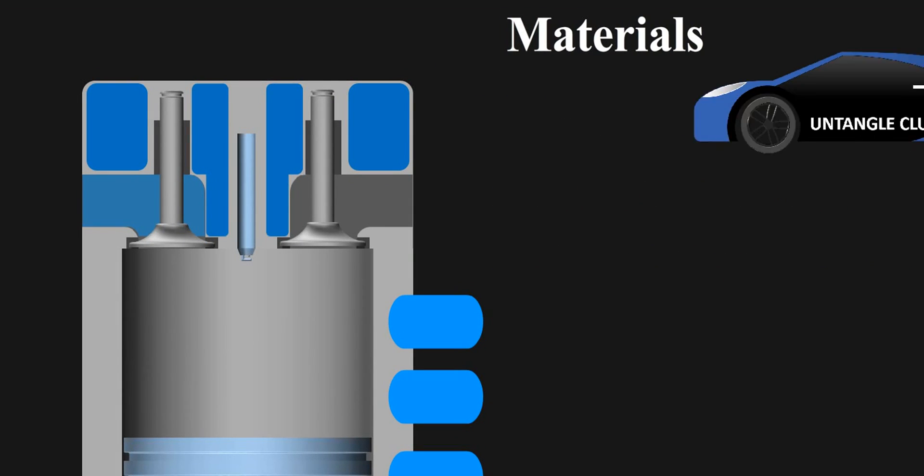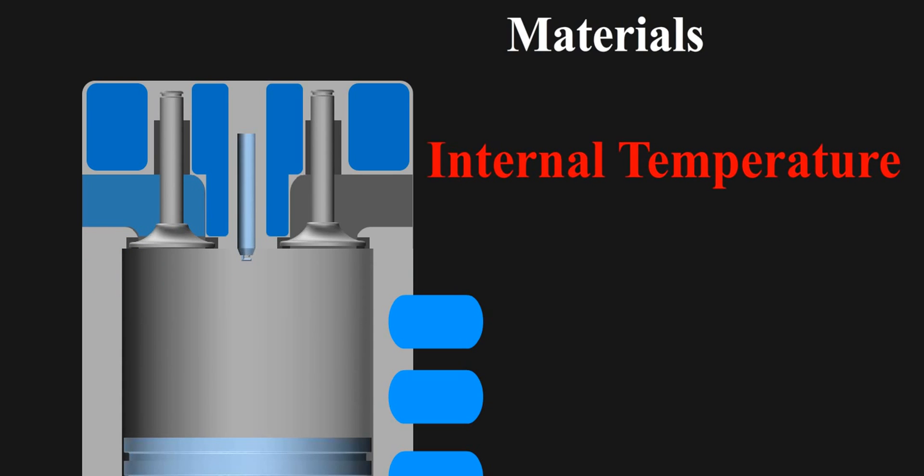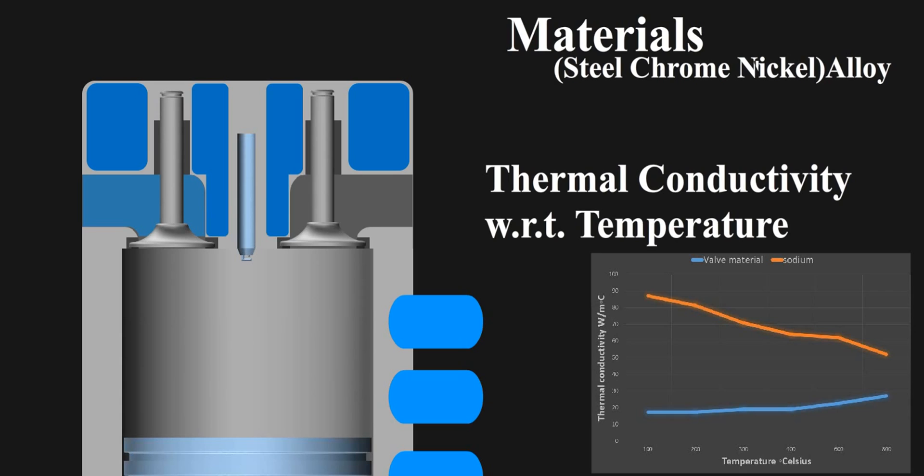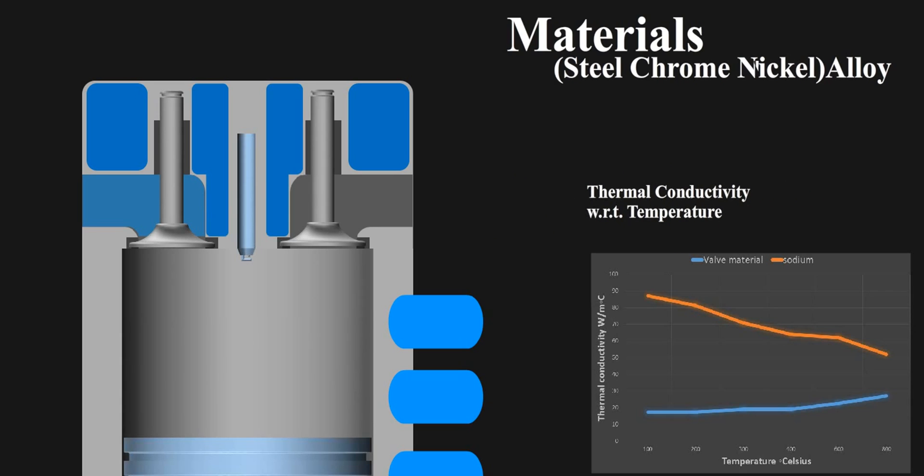When the valve material is selected for performance or heavy duty engine which may reach high internal temperatures generally steel chrome nickel alloys are used. These materials are good at all aspects but their thermal conductivity with respect to temperature is very low. This raises an issue of hotspot on the valve head.